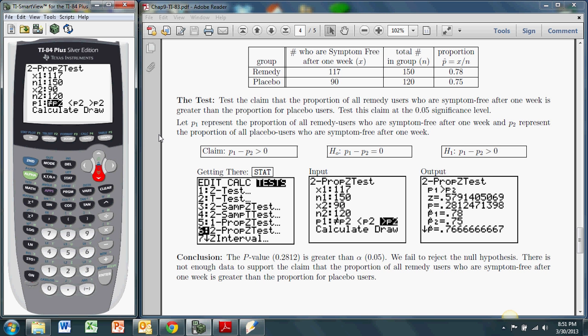We see this is a right tail test, P1 minus P2. And by the way, that's the way this test is always set up. We're always assuming P1 or x1 over n1 minus x2 over n2, and we're either suggesting that it's greater than zero, less than zero, or not equal to zero. So I'm going to scroll over to greater than. And we're ready to go. I have to hit enter. Hit calculate.